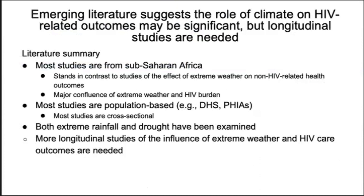To sum up what we know: most studies of extreme weather and HIV outcomes to date are from sub-Saharan Africa. Most of the studies have been population-based but limited to cross-sectional designs. They've examined both extreme rainfall and drought, and there's really only been one longitudinal study — the only study to our knowledge that also examined HIV care outcomes.